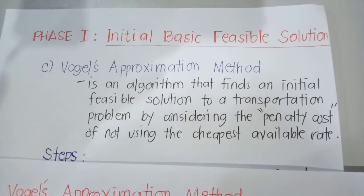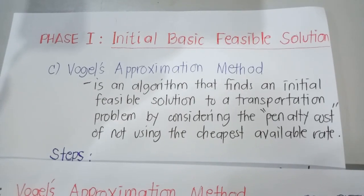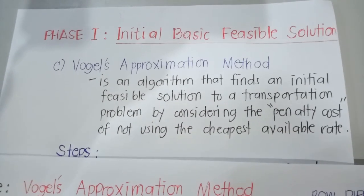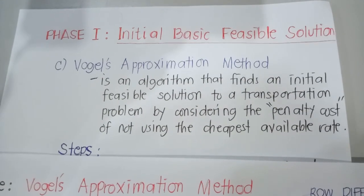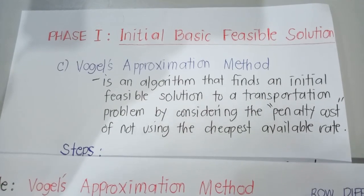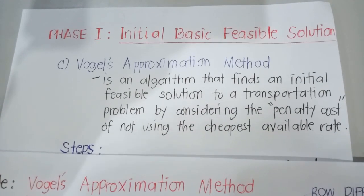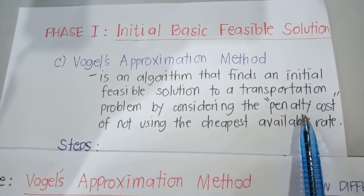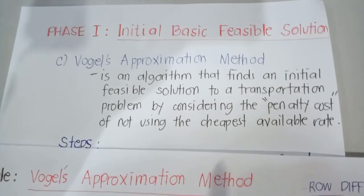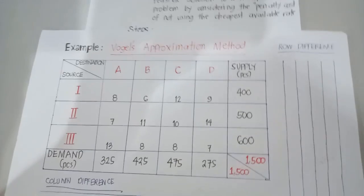And finally, the last method used in establishing the initial basic feasible solution is Vogel's Approximation Method, or VAM. It is an algorithm that finds an initial feasible solution to a transportation problem by considering the penalty cost of not using the cheapest available rates. Let me show you an example.